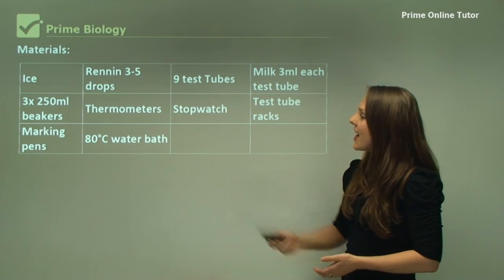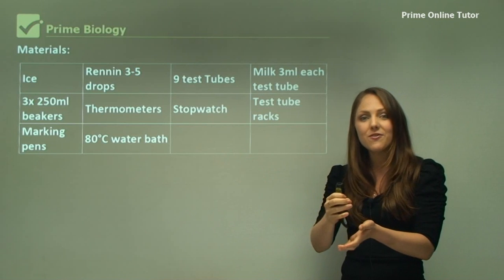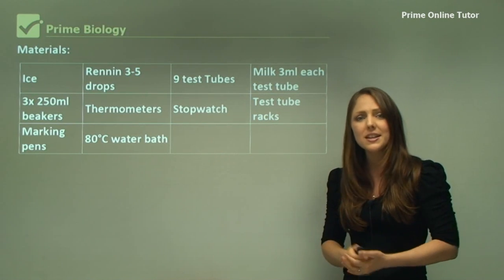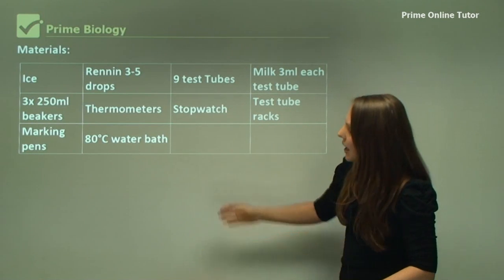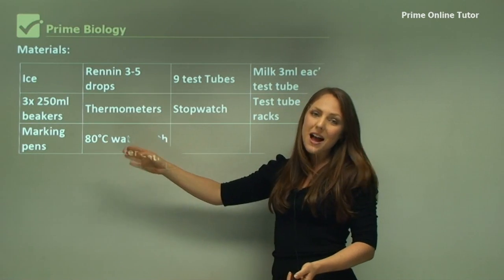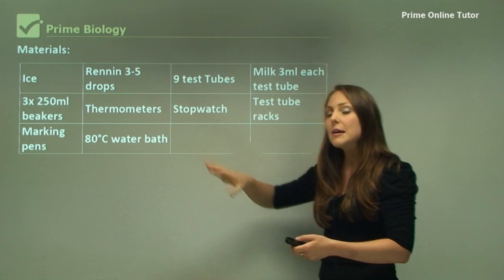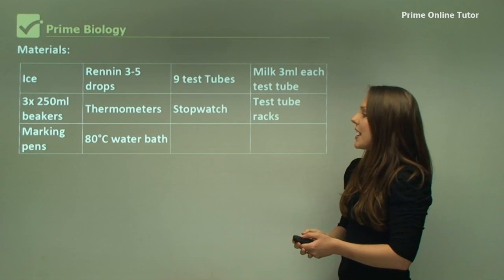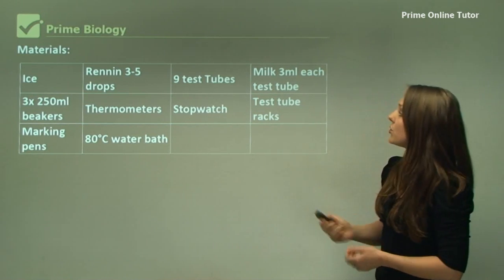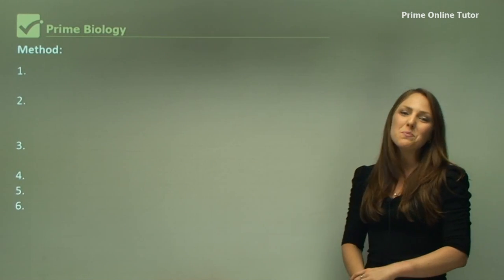A stopwatch so we can record the rate of reaction and how long it takes. Thermometers to measure the actual environment temperature. It's good to keep it consistent, so you do need a thermometer in every environment. We need beakers, marking pens to mark the beakers which will hold our test tubes, and an 80 degree water bath as well as a 40 degree water bath.